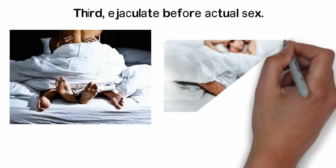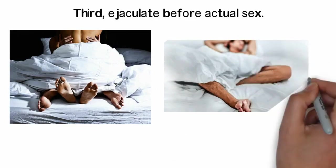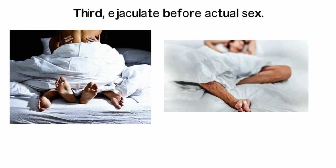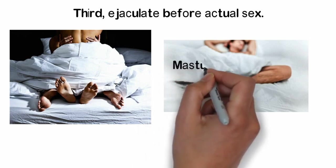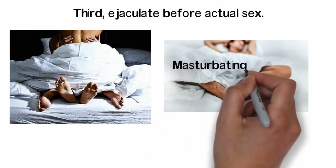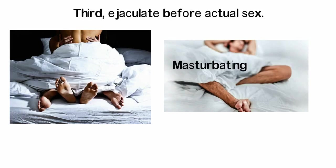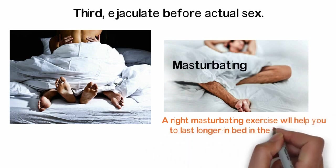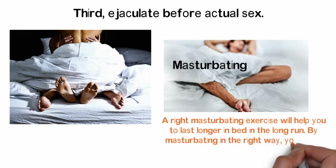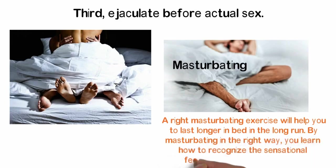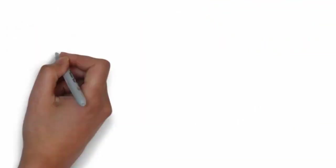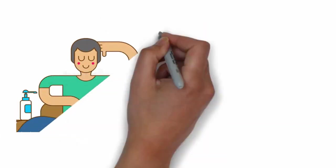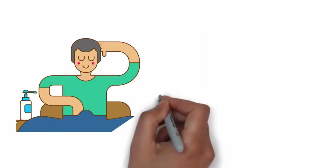After you have your first ejaculation, your second ejaculation will not normally come so soon and you will be able to satisfy your sex partner before ejaculation. Masturbating alone prior to a sexual encounter is a free and simple technique to help fight premature ejaculation. A right masturbating exercise will help you to last longer in bed in the long run. By masturbating in the right way, you'll learn how to recognize the sensational feeling right before ejaculation. Once you have recognized the feeling, you'll be able to control your ejaculation by stopping at the right time before triggering the point of no return.